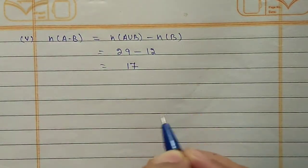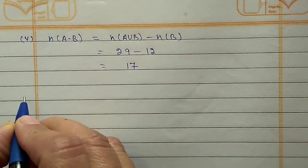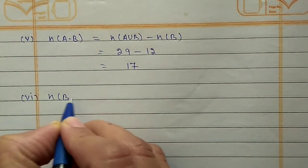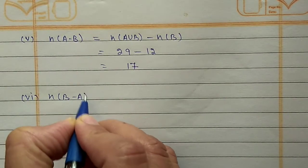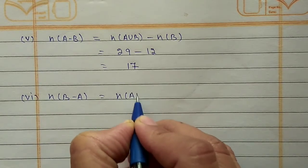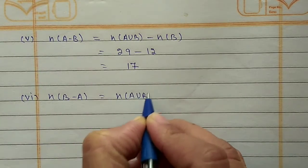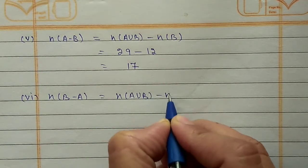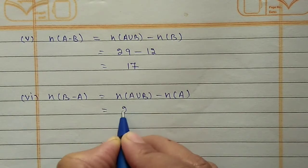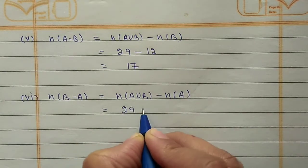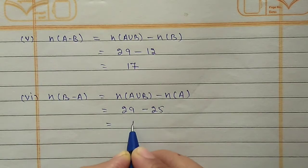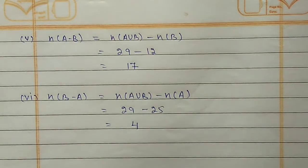For the sixth part, N(B - A): using the third property N(B - A) = N(A∪B) - N(A). N(A∪B) is 29 and N(A) is 25, so the answer is 4.